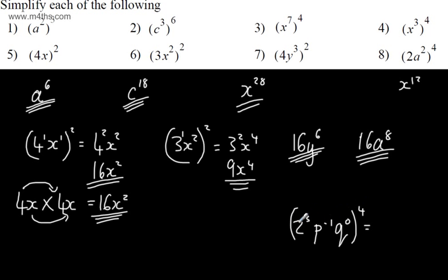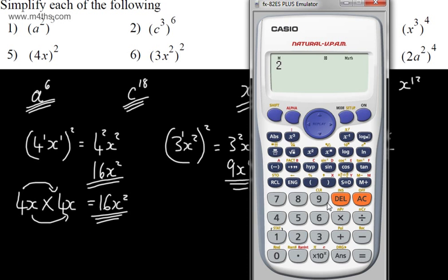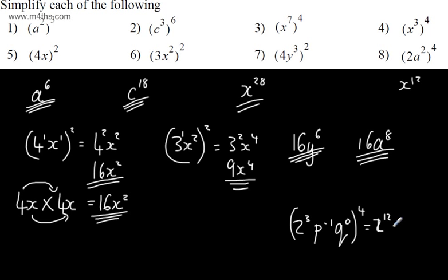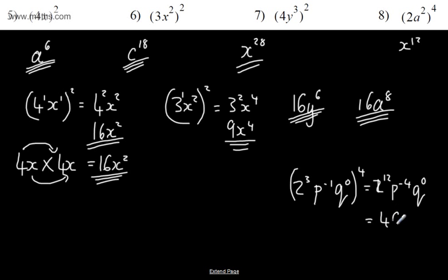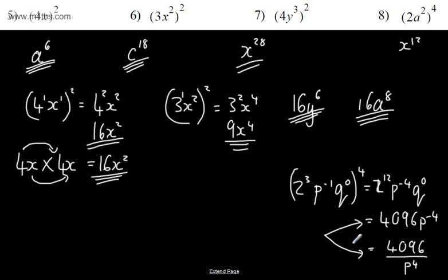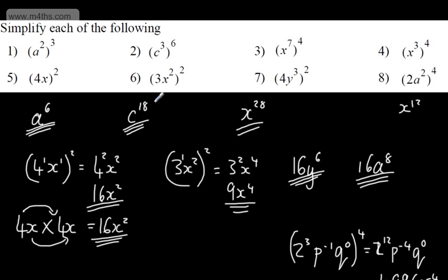We get 2 to the power of 12, which is 4,096. Then p to the minus 4, and q to the power of 0 — since 4 times 0 is 0. So this equals 4,096 times p to the minus 4. Remember, q to the 0 is just 1. Alternatively, we could write this as 4,096 over p to the 4th. Either form is perfectly fine, and you'll work between them as you progress.